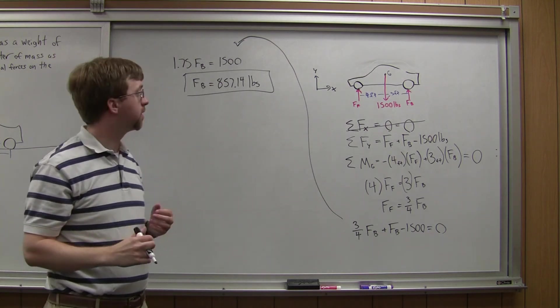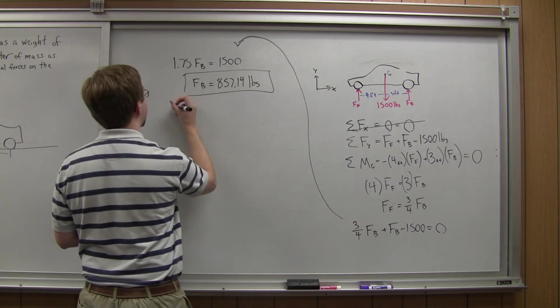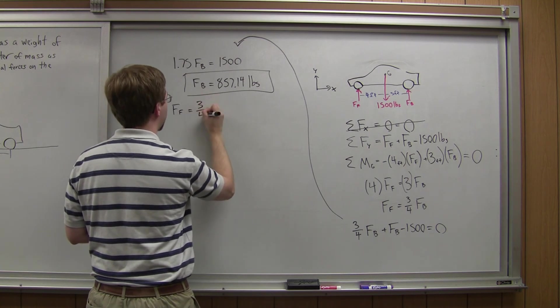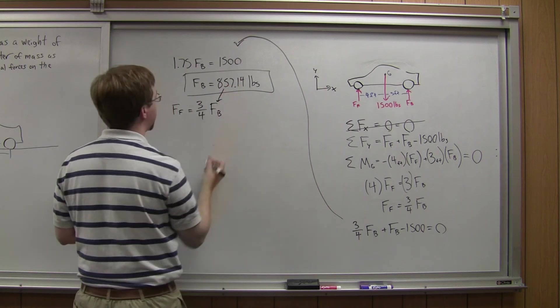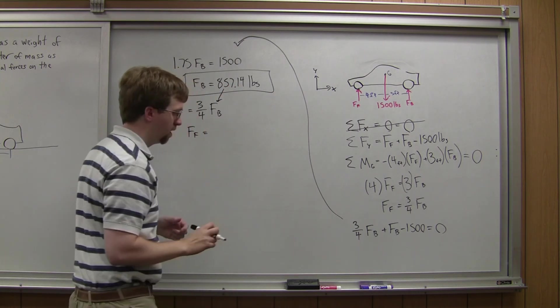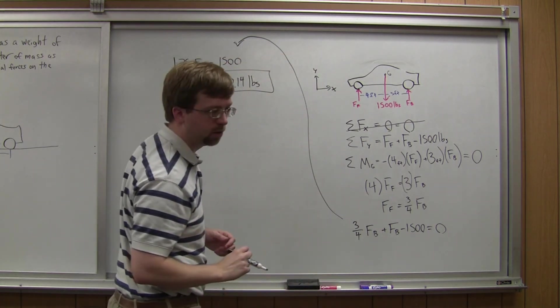Now we have to find the normal force in the front. I can use this equation here. So Ff equals 3 quarters times Fb. This is Fb, I just bring that down here. And I got Ff being equal to 642.86.